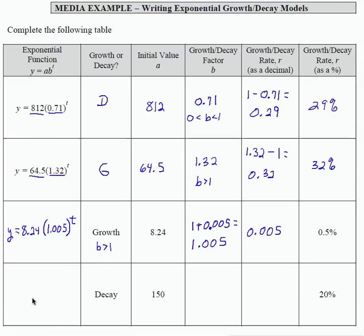At the last row, the fourth row, looking at that one now, I have a decay equation, which means that b is going to be between 0 and 1. My a value is 150, so I can start my equation.